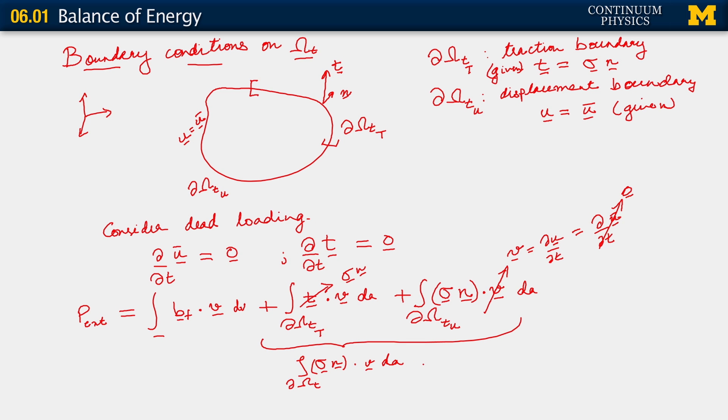And it's on this form that we then apply the divergence theorem. From the divergence theorem, this is equal to integral over omega t. Now we know that this becomes divergence of v dot sigma dv. So this is what happens in the case of dead loading.